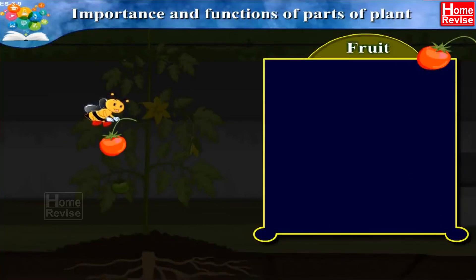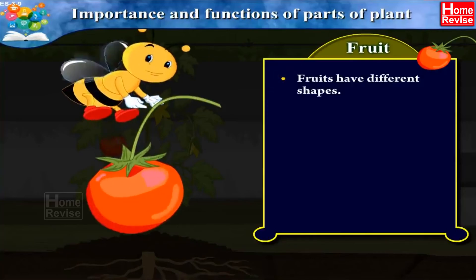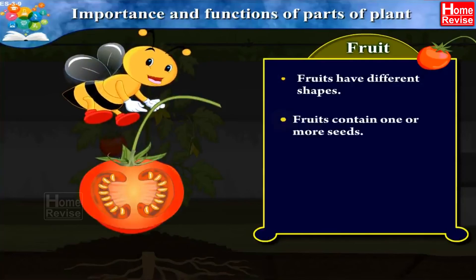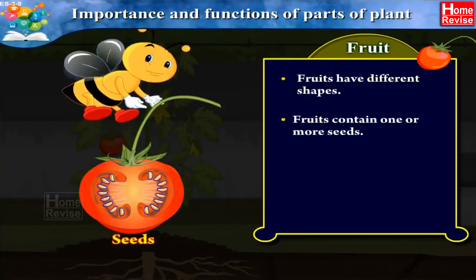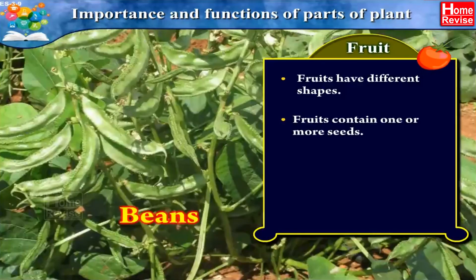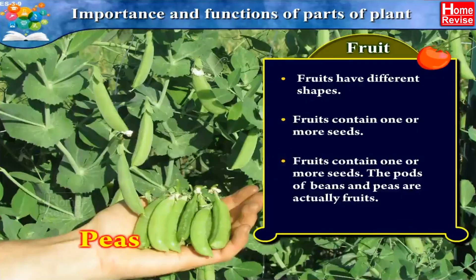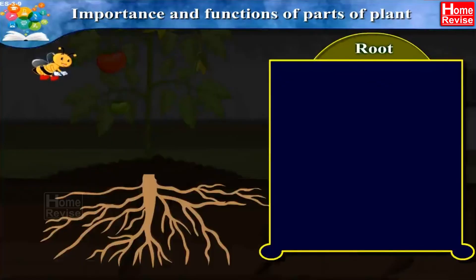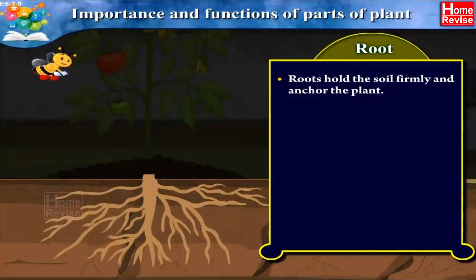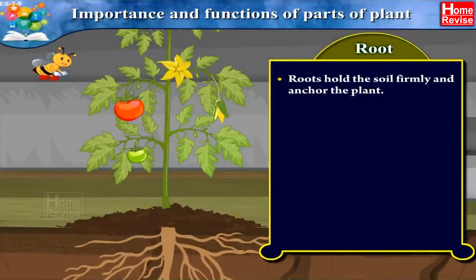The fourth part of the plant is the fruit. Fruits have different shapes and contain one or more seeds. Interestingly, the pods of beans and peas are actually fruits.